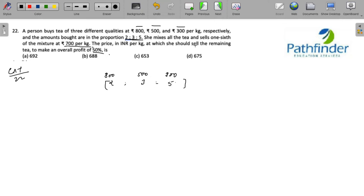Now since she is selling one sixth of the mixture, I will assume that the quantities are 6 kg, 9 kg and 15 kg respectively. This will ensure that the total quantity is a multiple of 6 and we can calculate one sixth as an integer number.